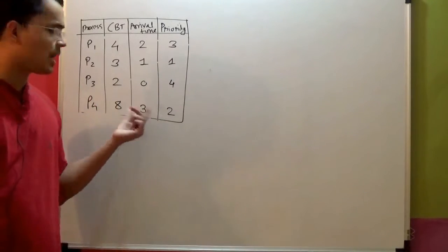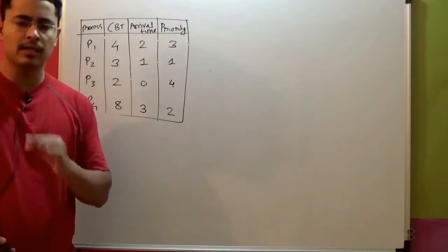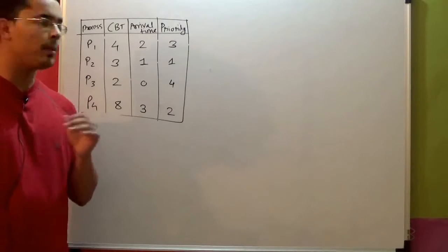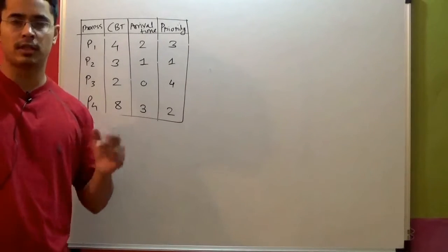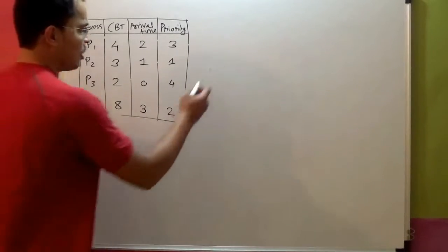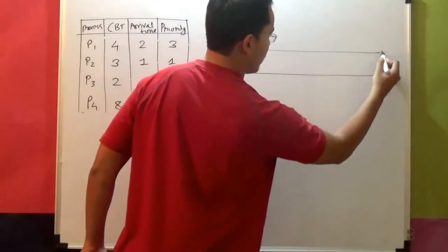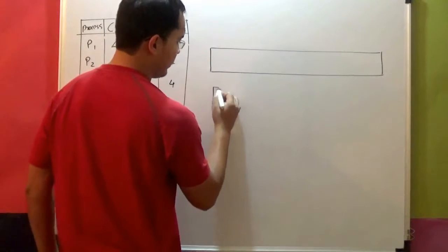Now if you can see there is an additional column of arrival time. That means this time around we will be using preemptive version of the priority scheduling algorithm. Now as always we will learn to draw a Gantt chart, and to draw the Gantt chart we will need a queue.